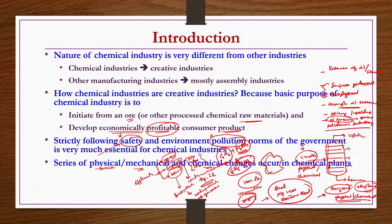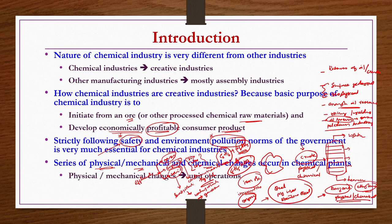For example, with iron ore — crushing, grinding, size reduction, washing, and drying are all physical operations; no chemical changes occur. Such physical operations are known as unit operations, whereas chemical reactions that may also take place are known as unit processes.